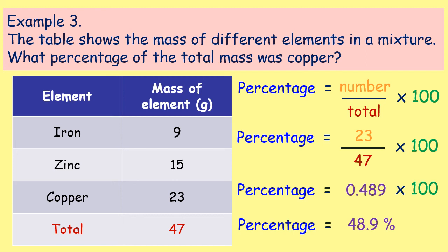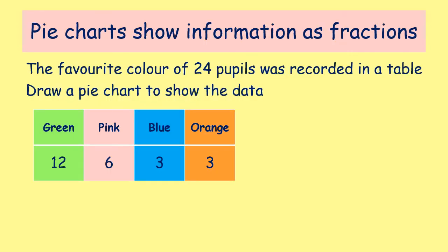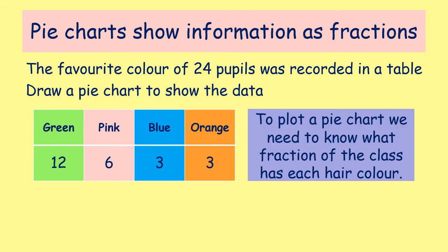Now we're going to move on to our final skill, and that is how to draw a pie chart. Pie charts are used to show information as fractions, and we divide a circle into those fractions. In this example, the favourite colour of 24 pupils was recorded in a table, and we've been asked to turn that information into a pie chart. Our first step is to work out the fraction of pupils for each colour, taking the numbers from the table and turning them into fractions.